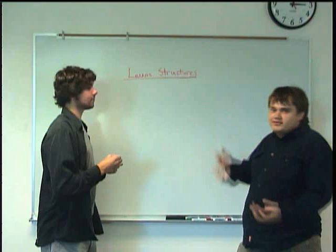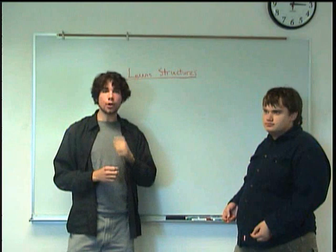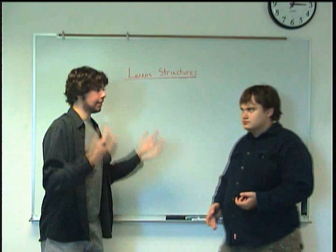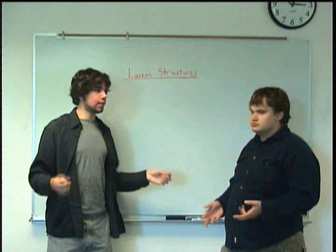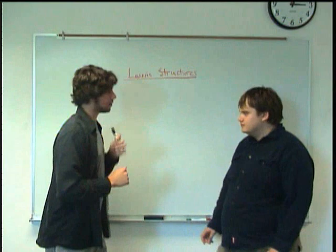Lewis structures — what are they exactly? The whole point of doing a Lewis structure is it's a way to visually show how things bond together. You have the valence electrons on the outside of an atom — they have the highest energy, they're the ones that are involved in bonding. So Lewis structures basically take that concept and show how two things will bond together using the valence electrons. It's like a visual way of sorts.